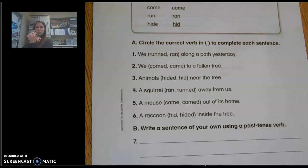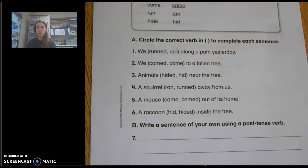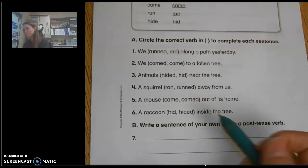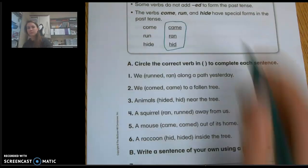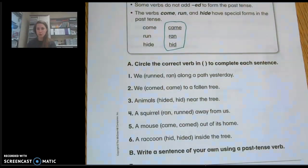So you will just circle the one that is correct, and then you'll write a sentence of your own using a past tense verb. So you can use any of these verbs above that are past tense and use one of those words in a sentence.